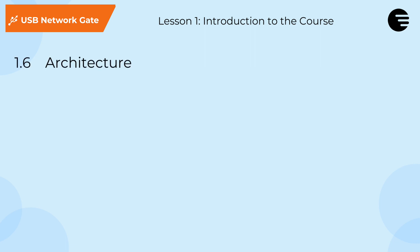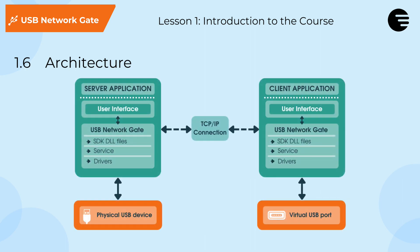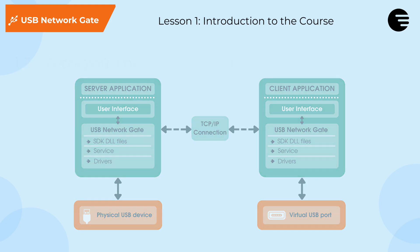For both the client and server applications, the demo application we'll build is a GUI using Windows Presentation Foundation, or WPF. These GUI applications will import DLL files from the SDK and use these to call functions which will communicate with the USB Network Gate Windows service, which will need to be running on both the server and client machines. This service in turn communicates with the custom device drivers that are needed to redirect data to and from the physical and virtual USB ports on the client and server respectively.